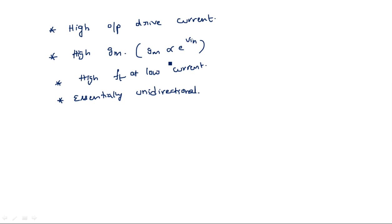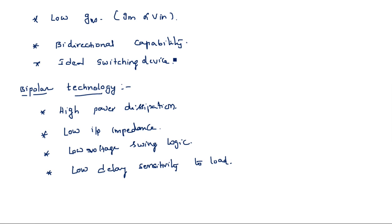Another key point is bidirectional capability. In CMOS technology, source and drain are interchangeable, giving it bidirectional capability. In bipolar technology, once the P and N structures are created, the emitter, collector, and base are fixed forever. These are the different advantages and disadvantages of the two technologies.